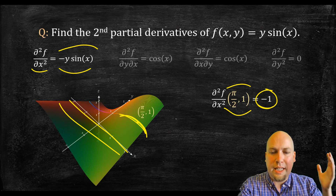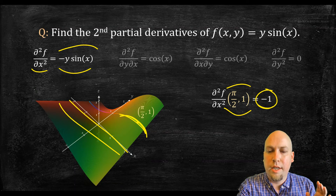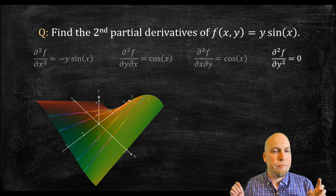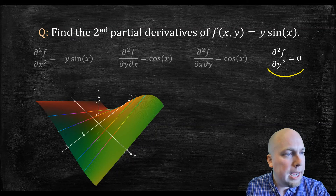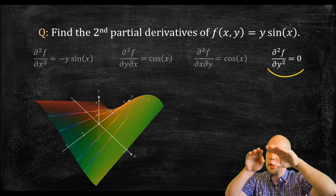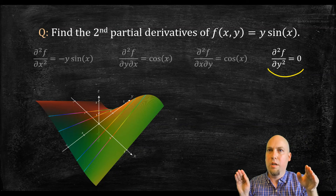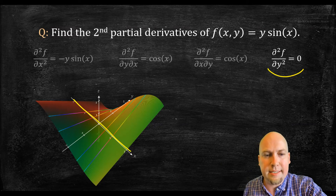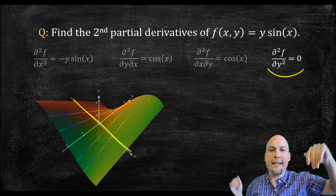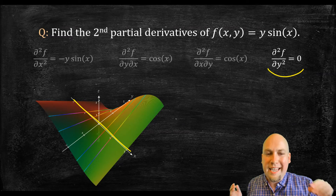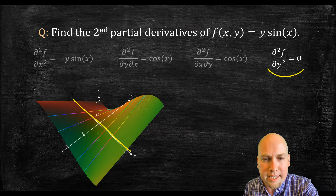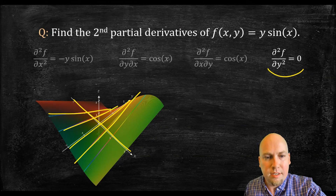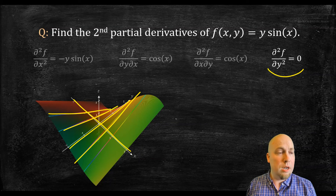Similarly, the double y partial tells us about concavity in the y direction. For this function the second y partial is zero, which tells us the function is linear in the y direction — not concave up or concave down. If you focus on the y cross-sections of the graph, they're just straight lines everywhere.